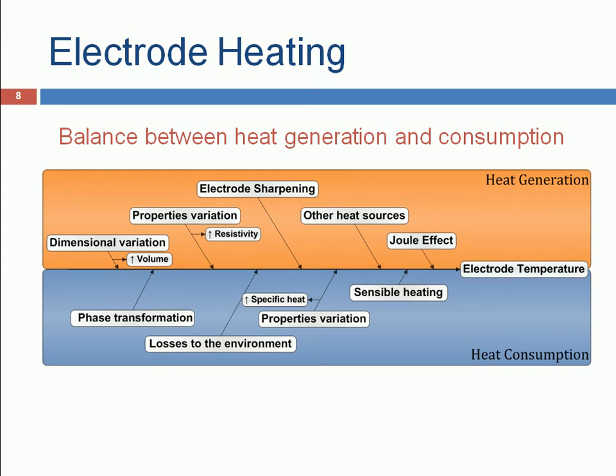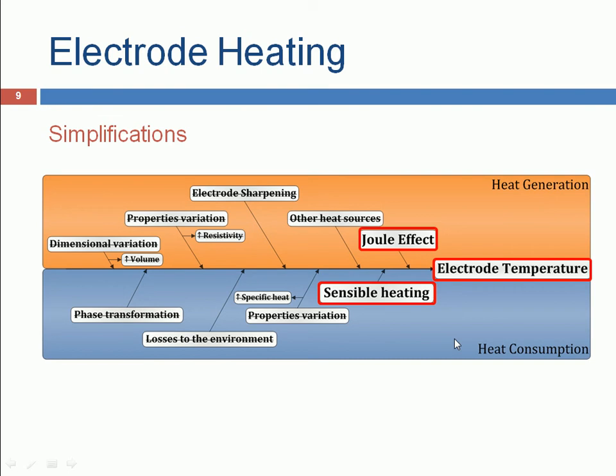Focusing on the electrode heating, we observed that there are several factors that affect heat generation and increase the electrode temperature, while there are other factors that cause heat consumption and decrease the electrode temperature. It's a very complex task to evaluate the contribution of each of these factors in the electrode temperature. So we did some simplifications. We considered that the heat generation was only by Joule effect and we studied the heat generation during arc ignition. We considered also that this heat was completely used in increasing the temperature of the electrode by sensible heating.